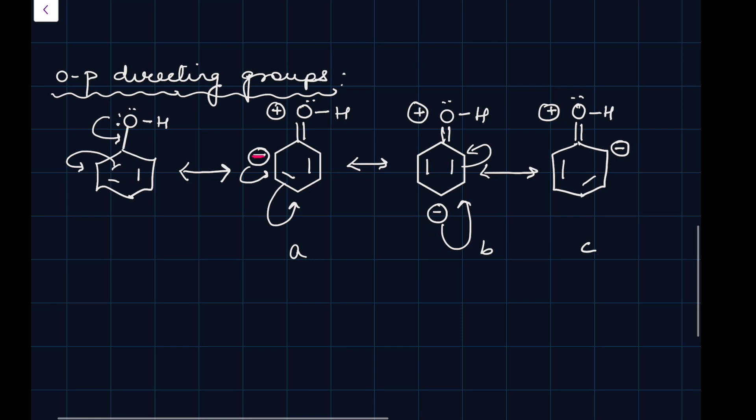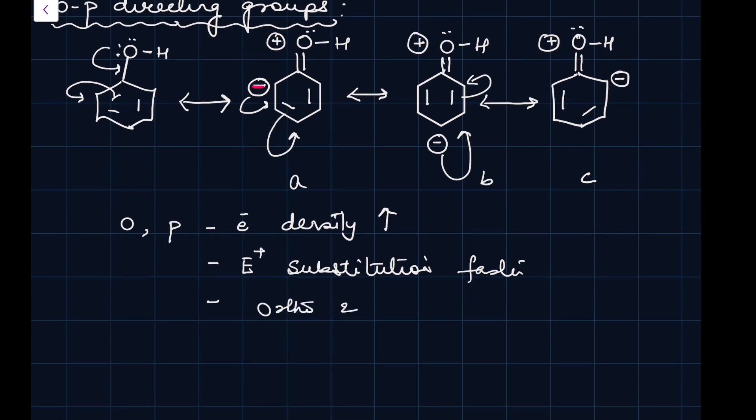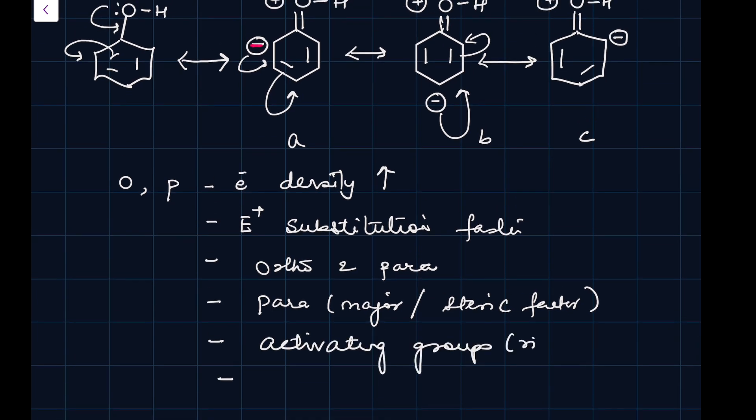Now, if you look at diagram A, B and C, you will see that at the ortho and the para positions, the electron density increases. Because benzene always undergoes electrophilic substitution, electrophilic substitution will be faster. The groups will get substituted at ortho and para. Usually, para will be major due to steric factors because at ortho there is going to be a lot of congestion because OH is already there.